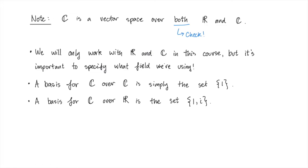However, if we think about the complex numbers as a vector space over the real numbers, we can no longer use the same basis since we're not allowed to multiply by complex numbers anymore. In this case, I claim that a basis for C over R is the set consisting of the elements 1 and i.